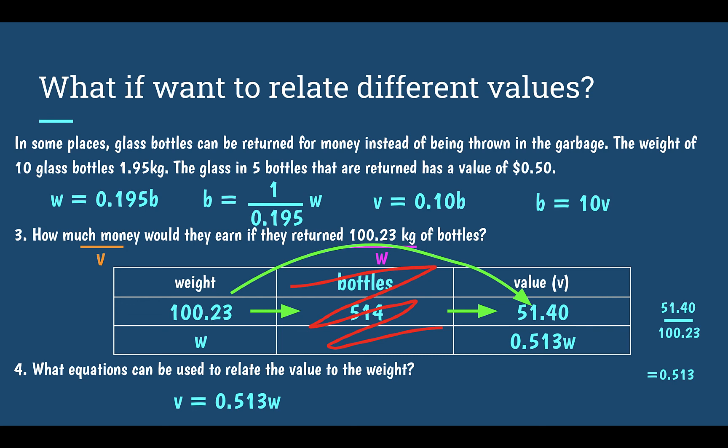To get my other equation, I just take the reciprocal: 100.23 divided by 51.4, which equals 1.95. And my weight would be equal to 1.95 times the value.